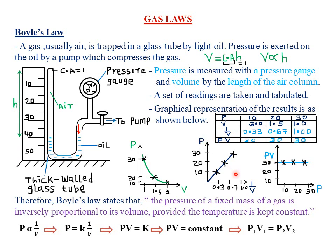We also plot a graph of pressure against the reciprocal of volume. To find the reciprocal of volume we compute 1/V: 1÷3 = 0.33, 1÷1.5 = 0.67, 1÷1 = 1.00. Plotting pressure against 1/V shows that as pressure increases from 10 to 20 to 30, the reciprocal of volume also increases from 0.33 to 0.67 to 1 — a direct proportionality relationship.